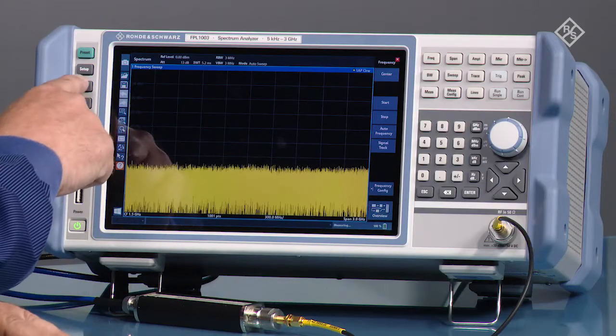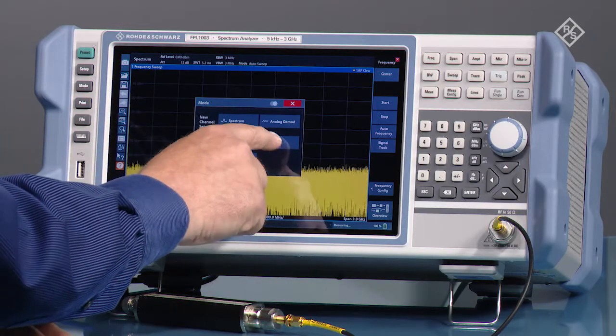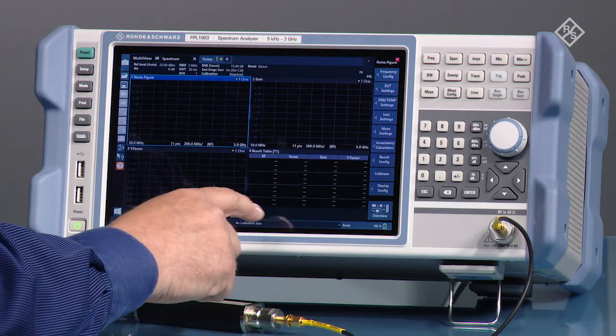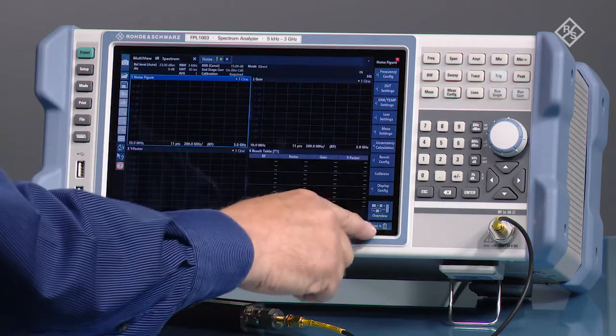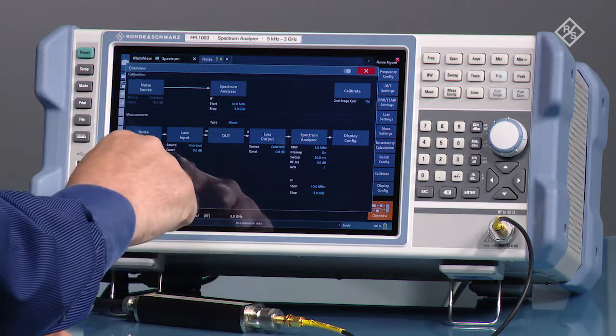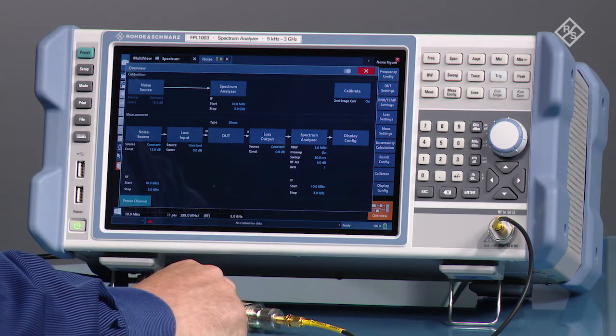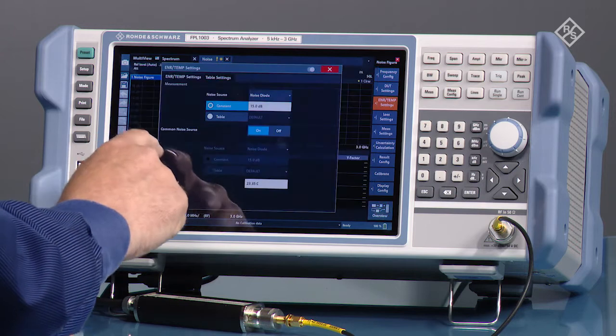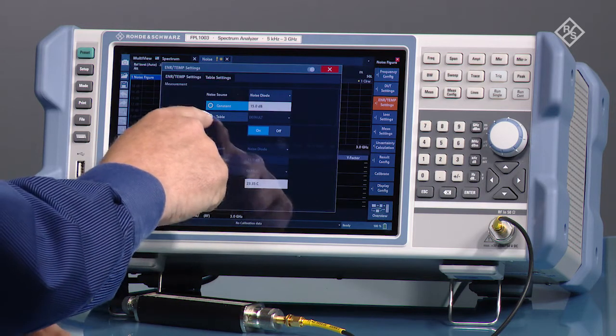We're going to start by selecting mode and open up the noise figure option. Here we have an overview button where we can step through all of the steps to set up the noise figure measurement. We're going to start under noise source and create a table.